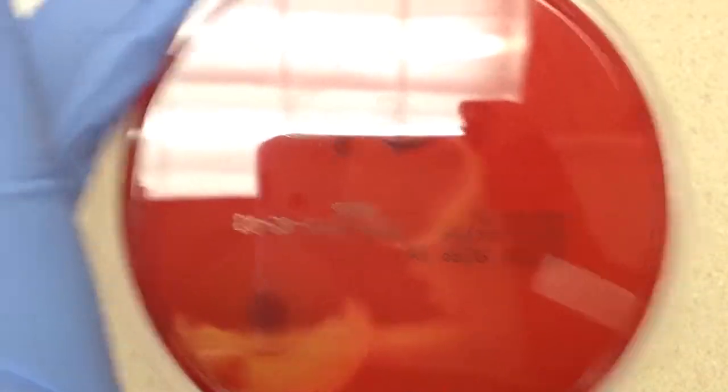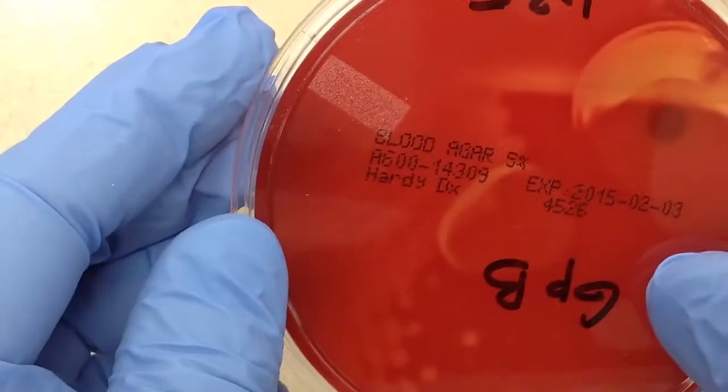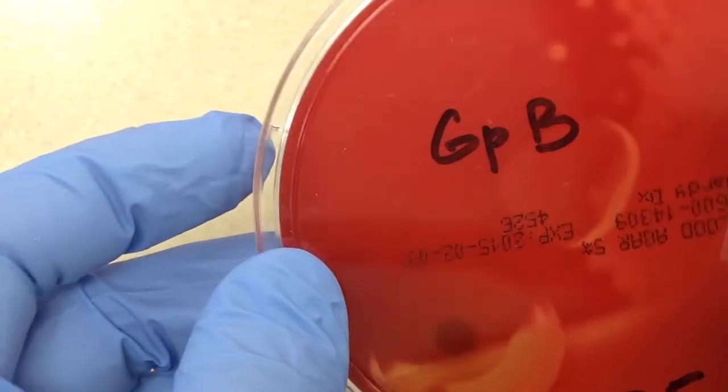The way it's been set up, it's on a sheep blood agar, just a regular blood agar plate, 5%, and it's been set up two ways on this plate.